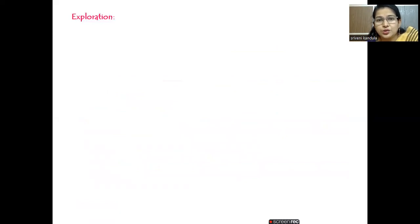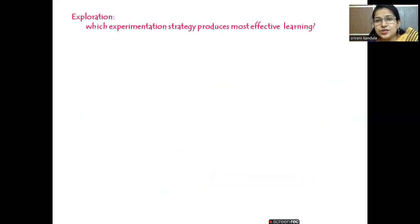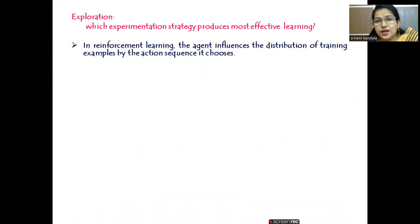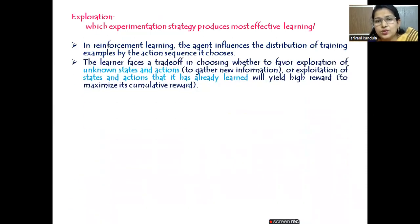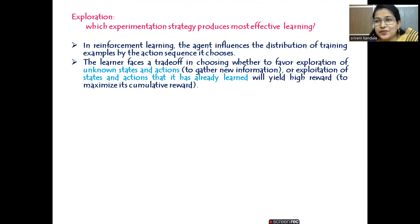The next problem is exploration. When the agent is exploring the environment, which experimentation strategy produces the most effective learning? That has to be decided by the agent. The dilemma is: should the agent explore unknown states and actions, or continue with states and actions it has already explored? This was also evident in Q-learning — we didn't know where to start, so we randomly picked some state, and iteratively over many steps the table got updated. It doesn't happen in a single step.